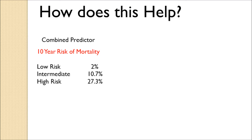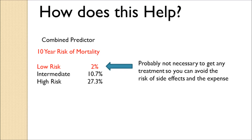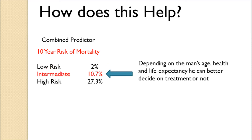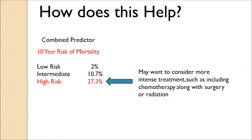How does this help? If the combined predictor shows a low mortality risk of only 2%, you may feel comfortable not recommending any treatment at all, avoiding side effects and expense. If it calculates a 10.7% mortality at 10 years, you may decide based on the patient's age, health, and life expectancy whether to push treatment more aggressively or not. And if the patient has a high risk of dying of the disease, you may consider more intensive treatment, such as chemotherapy along with surgery or radiation.